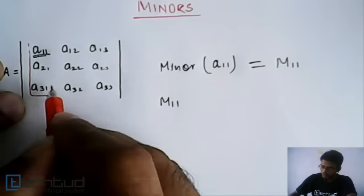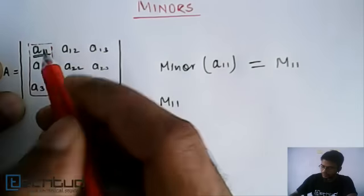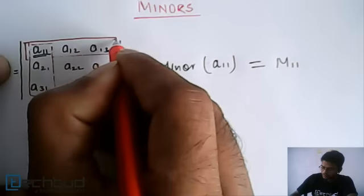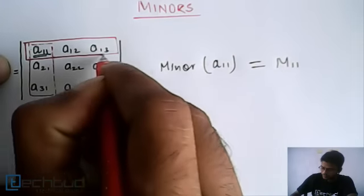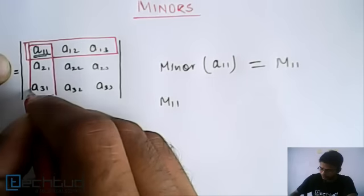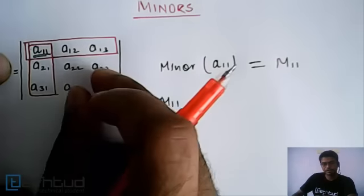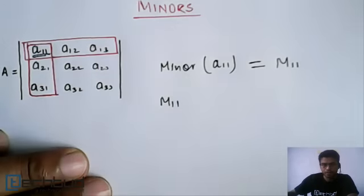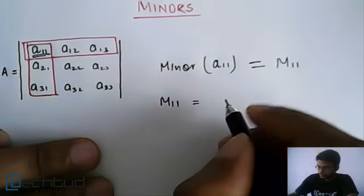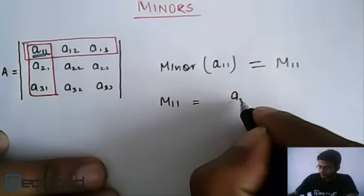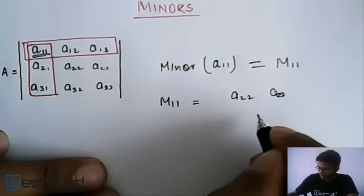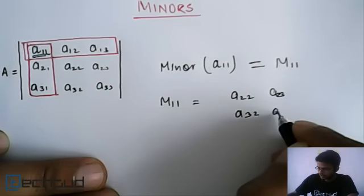Hide this column, hide this row, and then the remaining is our M11 equal to a22, a23, a32, and a33. So this is the minor of a11.